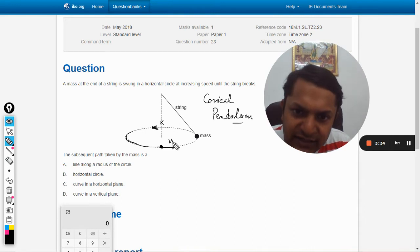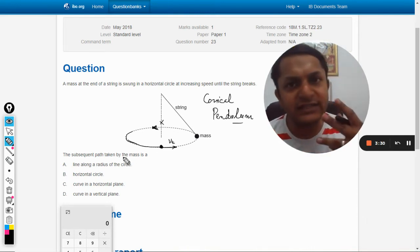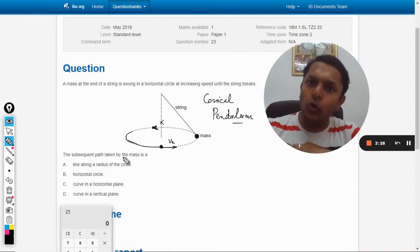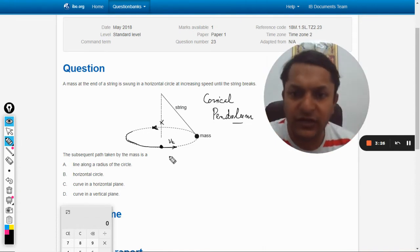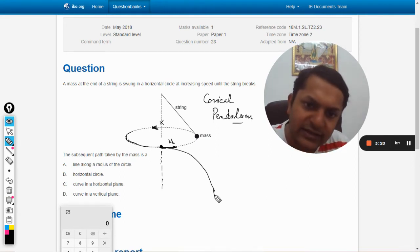It is having a tangential velocity now, that is v_t tangential velocity. And as soon as the string breaks, it will have only this tangential velocity. So what happens now is it will follow a path like this. So this is a path of a projectile motion.